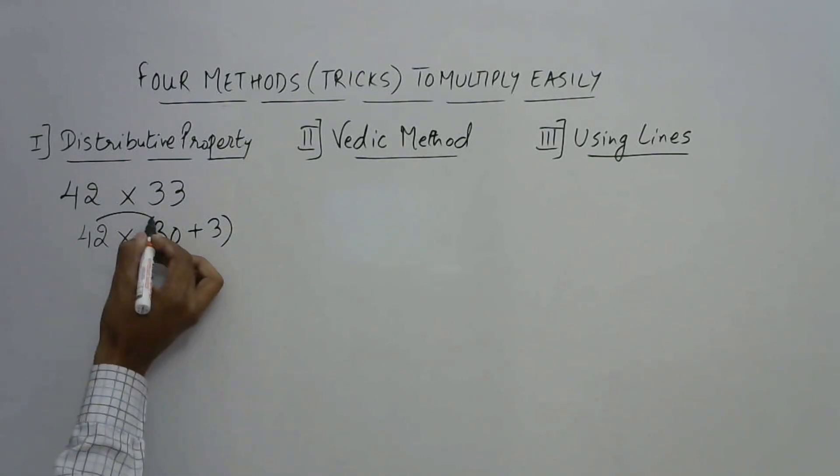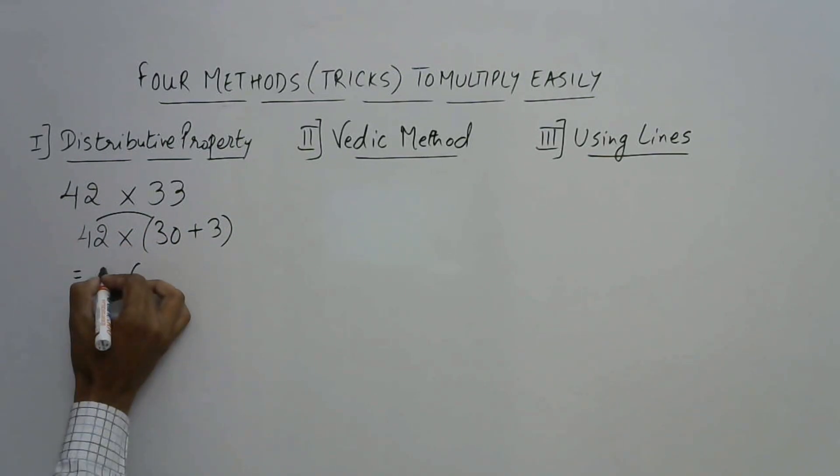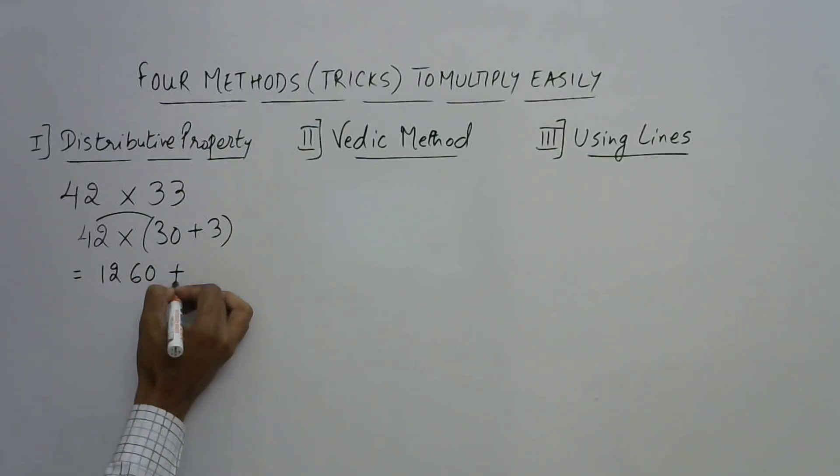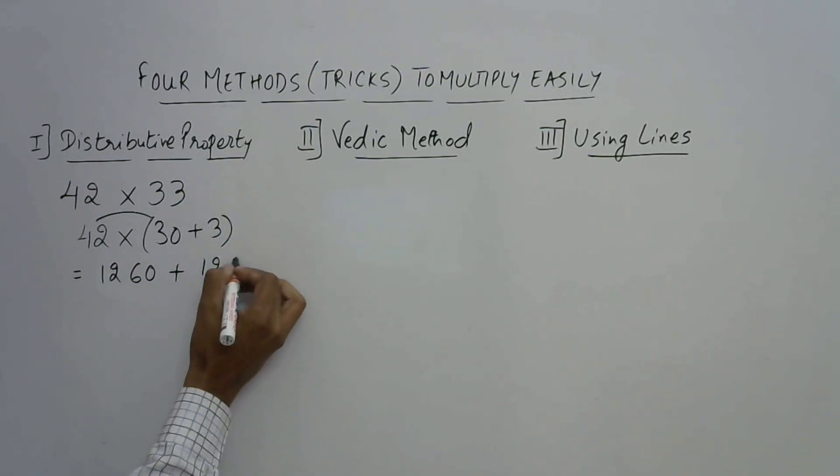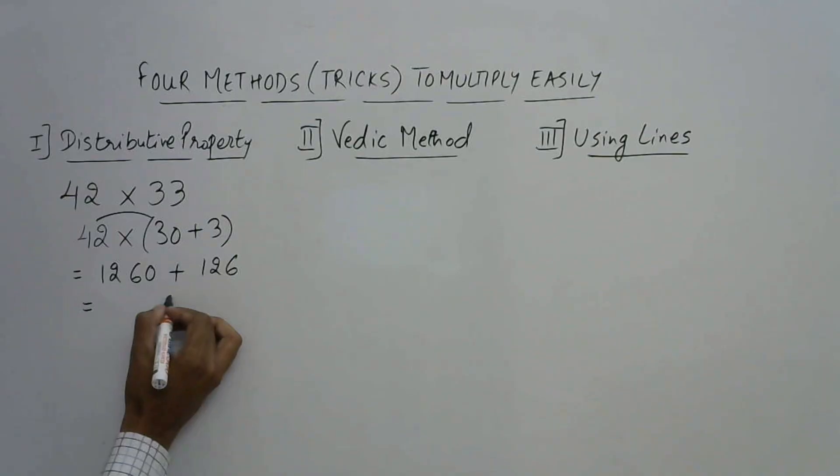Now 42 into 3 you can do it only 3 times 6 and 4 times 12 and put a 0. Then again 3 see 126. So you can add very easily now 6, 8, 3, 1. So 1386 is the product.